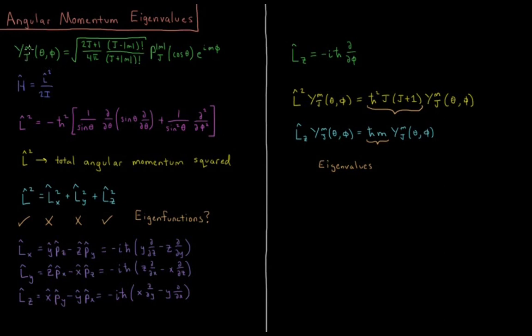And m can go from minus j to plus j as integer values. Theta and phi being the angular coordinates in spherical polar coordinates, theta the polar angle and phi the azimuth angle versus the z-axis in the xy plane.